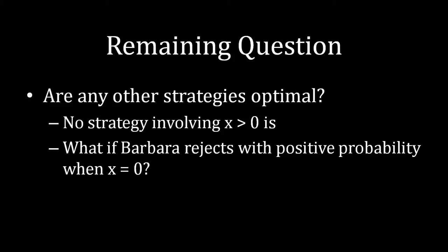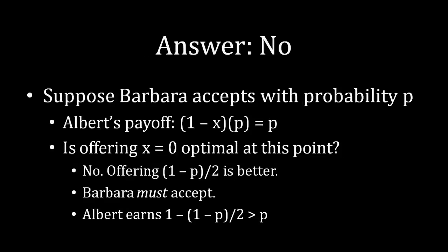The remaining possibility is what happens if Barbara rejects with positive probability when she's offered nothing. Remember again, that when Barbara is offered nothing, she is indifferent between accepting and rejecting. Previously, we looked at what happens when she accepts with certainty. But of course, it's still possible she might want to reject with positive probability. But what we're going to see here is given that she rejects with positive probability, there is no other optimal strategy. So to answer the question firmly again, there are no other optimal strategies than what we covered previously.